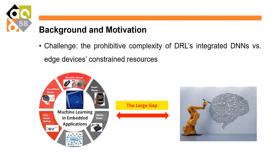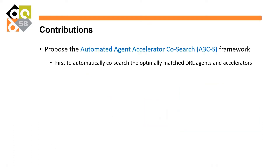To close this large gap, we propose a framework termed Automated Agent Accelerator Code Search Framework, A3CS. We are the first to automatically co-search the optimum matched deep RL agents — the network — and also the accelerator structure, in order to maximize both the task accuracy and hardware efficiency so that the application can run more efficiently on resource-constrained devices.